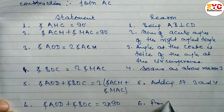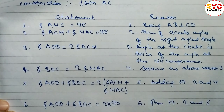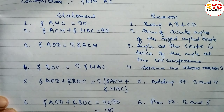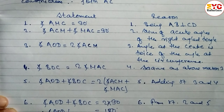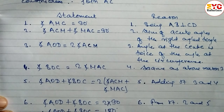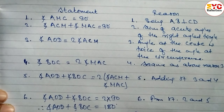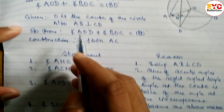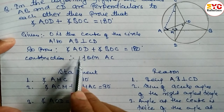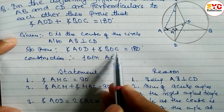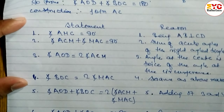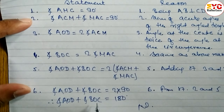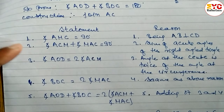Reason for statement 6: from statements 2 and 5. When you multiply, we get 180°. Therefore, angle AOD + angle BOC = 180°. Hence proved. We can see this matches exactly what we had to prove: AOD + BOC = 180°.